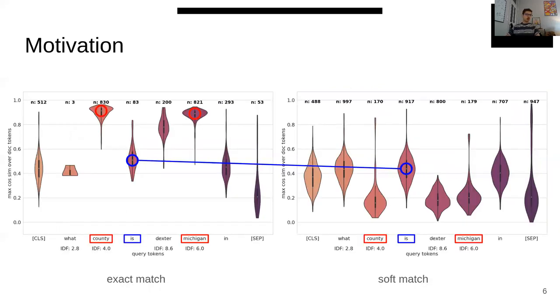Let's now check what it gives on an example. Here we have the query 'what county is Dexter Michigan in', and on the left, the exact match score distributions, and on the right, the soft case. We see that some terms that seem important in the query tend to focus on exact match: county and Michigan. The similarity scores tend to be higher with respect to other terms and with respect to the soft case on the right. So the contribution in ColBERT will tend to be higher.